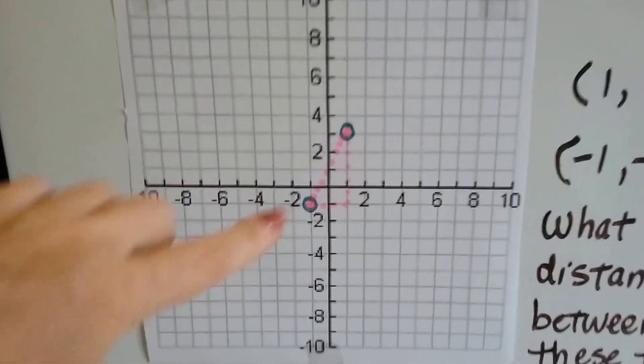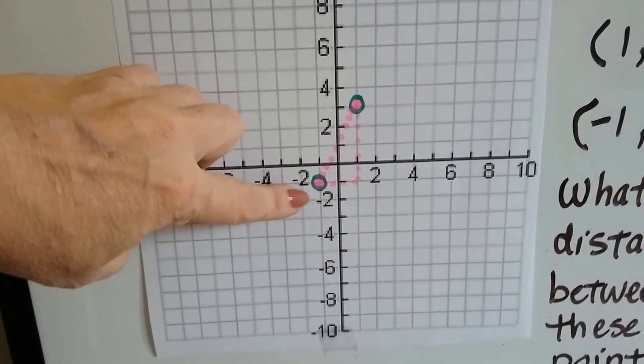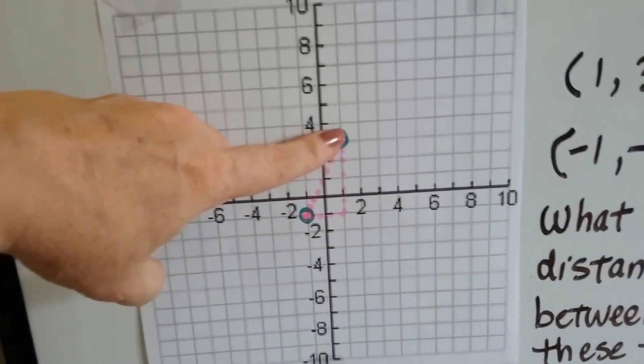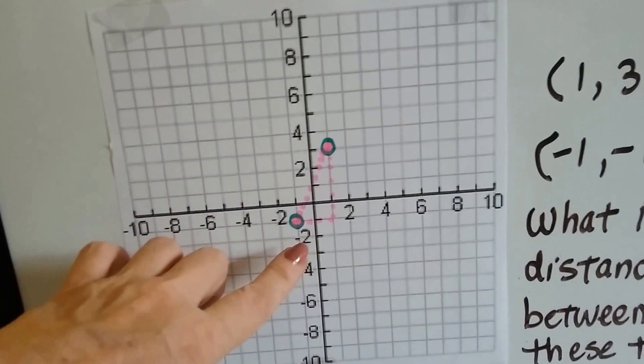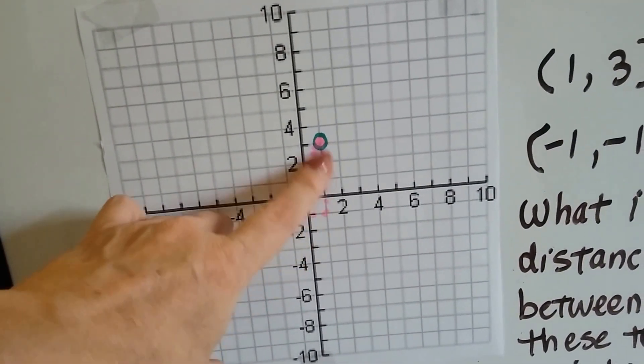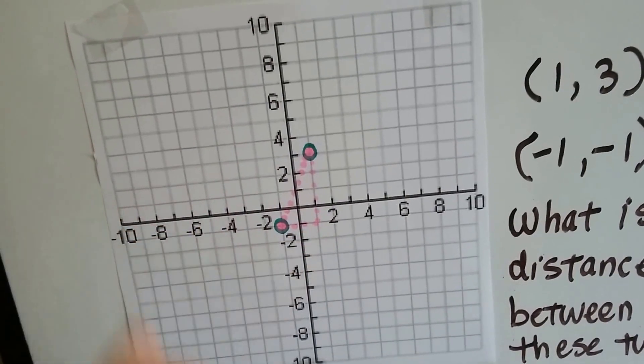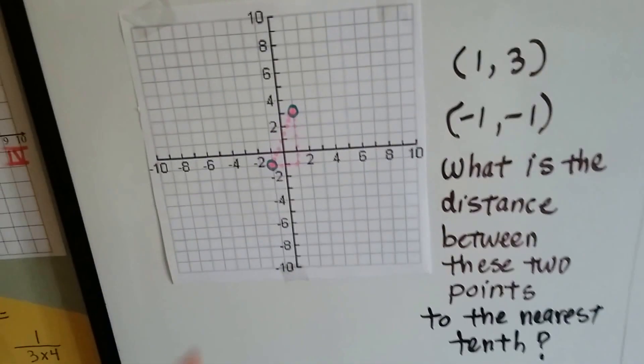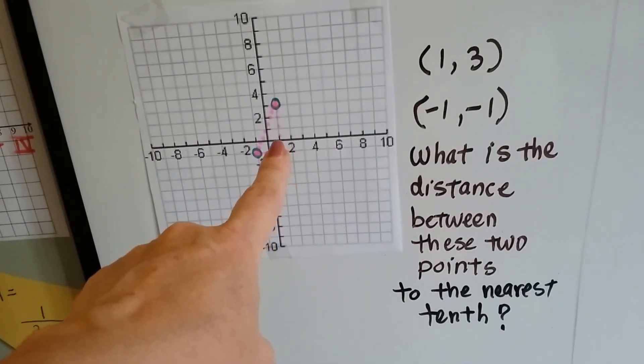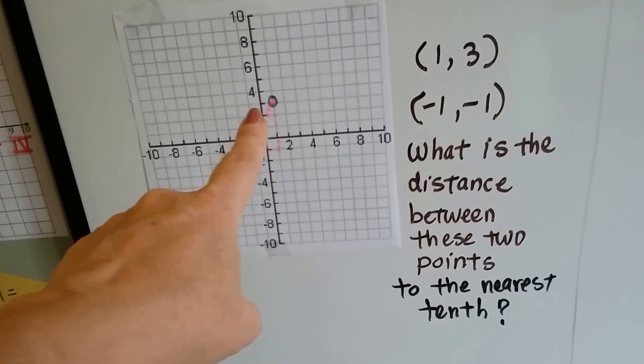So if we've got two points, one here and one here, we can connect the two points with a line segment and then make a right triangle, horizontal and vertical lines here. See that? So we've got point one and three. See that?